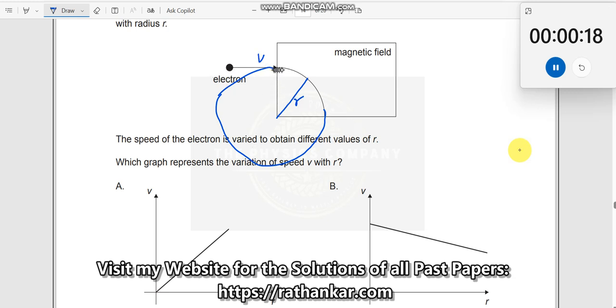When a particle is describing a circular motion, we know that mv square by r is equal to a driving force. What is the driving force? The magnetic field, which should be equal to bqv.